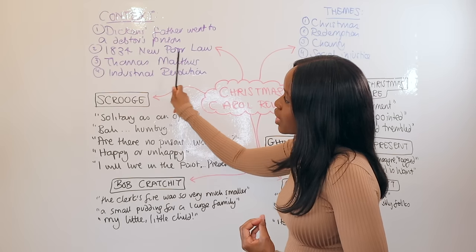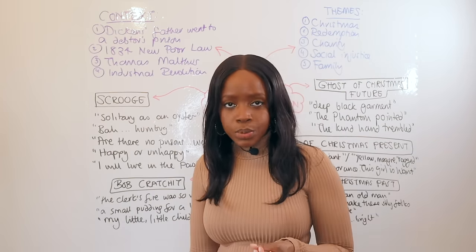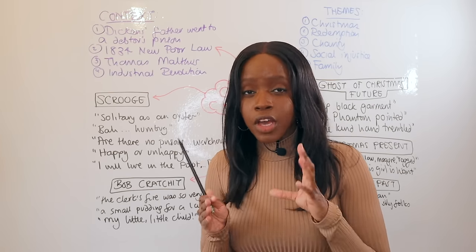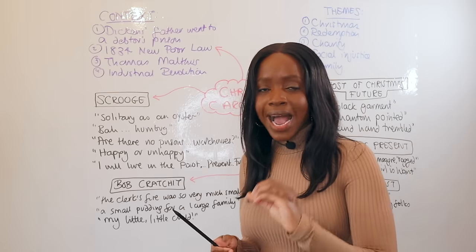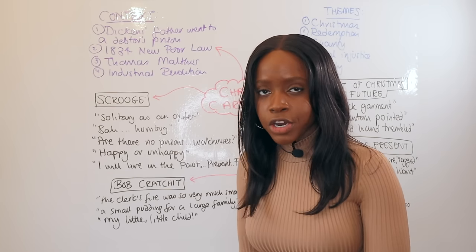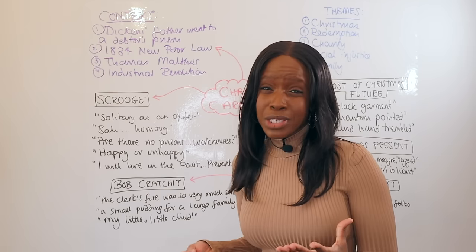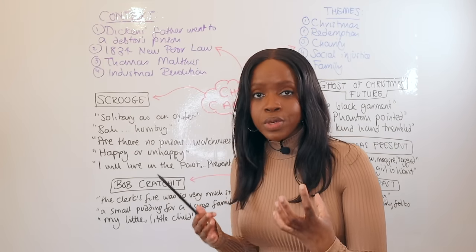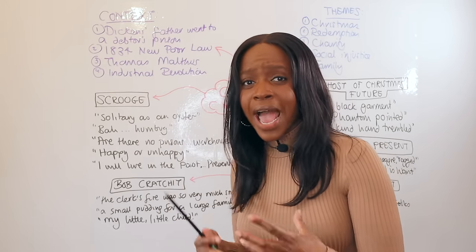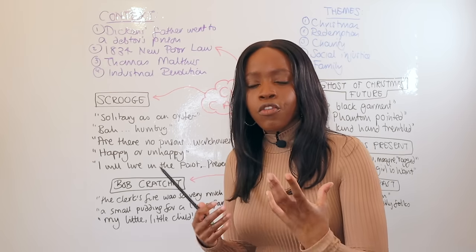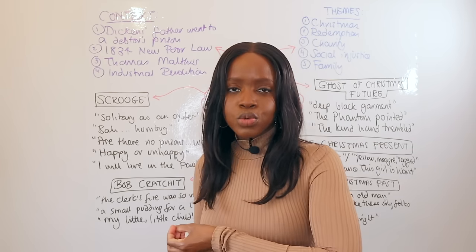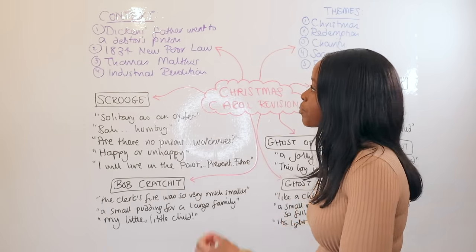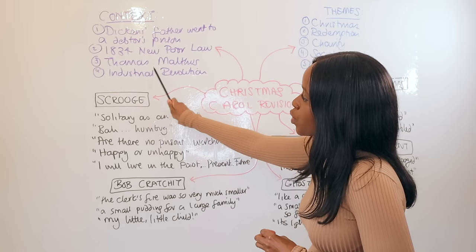The second context point is the 1834 New Poor Law. This law stated that if you were poor and unable to look after yourself, the government could help you — but only if you were willing to work for free in a workhouse, which provided accommodation on a cold factory floor. Dickens saw this as punishing the poor for their position and was very critical of it. This is alluded to when Scrooge says, 'Are there no prisons? Are there no workhouses?'